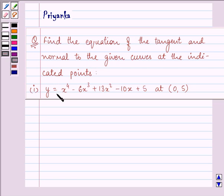Here we have y is equal to x raised to the power 4 minus 6x cube plus 13x square minus 10x plus 5 at the point (0, 5).